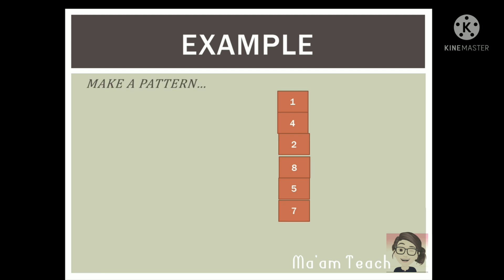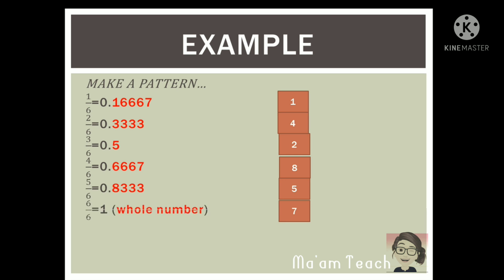Now we will make a pattern. Since the digits are 1, 4, 2, 8, 5, 7 — so 6 digits — we will create a mnemonic or pattern. Look at this: 1 over 6, 2 over 6, 3 over 6, 4 over 6, 5 over 6, 6 over 6. Look at the digits in the decimal part: 0.1667, 0.333, 0.5, 0.667, 0.833, and the last one is a whole number with no decimal digits.